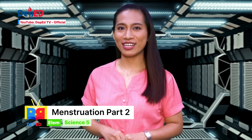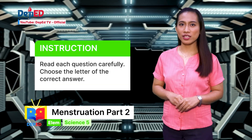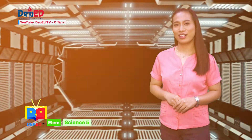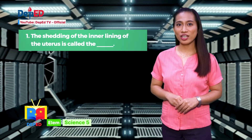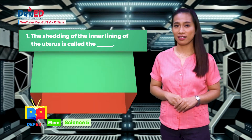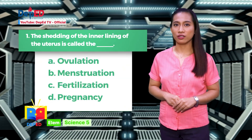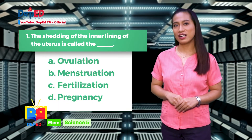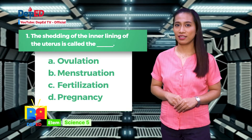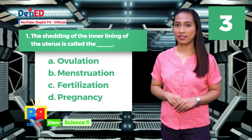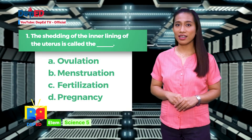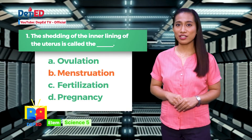Sight check — let's begin. Read each question carefully and choose the letter of the correct answer. Number one: The shedding of the inner lining of the uterus is called what? A. Ovulation, B. Menstruation, C. Fertilization, D. Pregnancy. The correct answer is letter B, Menstruation.